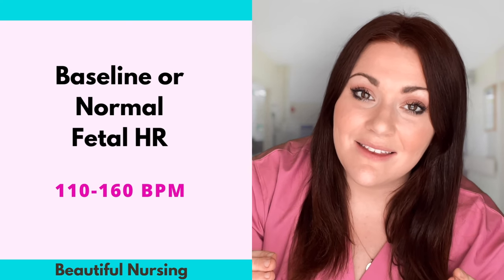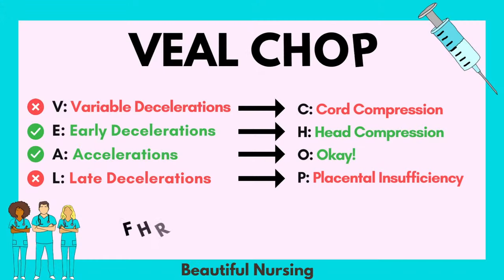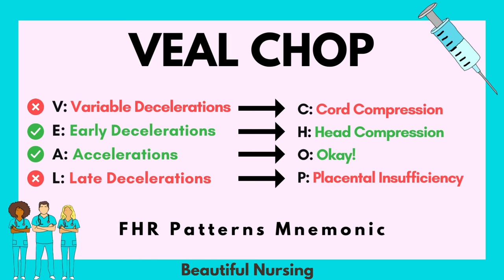There is a really easy mnemonic to remember the different types of fetal heart rates and what they mean. This is VEAL CHOP. The V stands for variable decelerations, which are due to cord compression. E is for early decelerations, due to head compression. A is for accelerations, which means it is okay. L is for late decelerations, which is due to placental insufficiency.